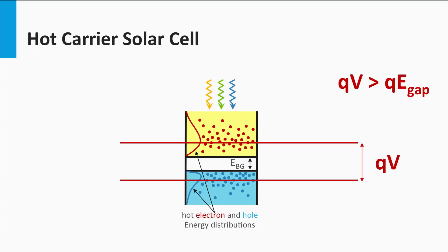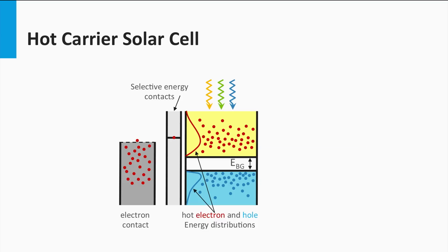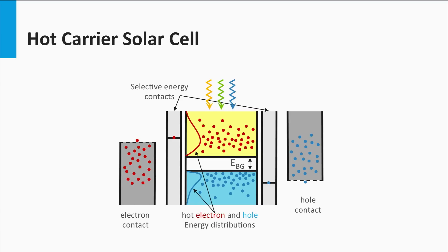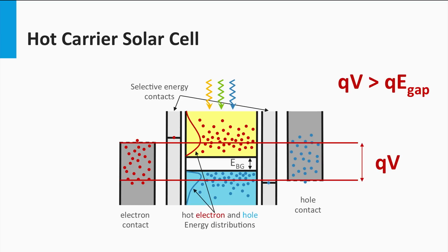It takes only a few picoseconds for the hot charge carriers to relax back to the edges of the electronic bands. A hot carrier solar cell is based on the collection of charge carriers when they are still hot, meaning the energy larger than the band gap energy could be utilized per excited charge carrier. The fundamental challenge is to collect the hot carriers before they relax back to the band edges, which requires selective contacts — contacts that only select electrons above a particular energy level in the conduction band, and contacts that selectively collect holes below a certain energy level in the valence band. In theory, the band gap utilization could be higher than the band gap itself. The main challenge is to increase the lifetime of hot charge carriers so they have time to move from the absorber layer to the selective contacts.